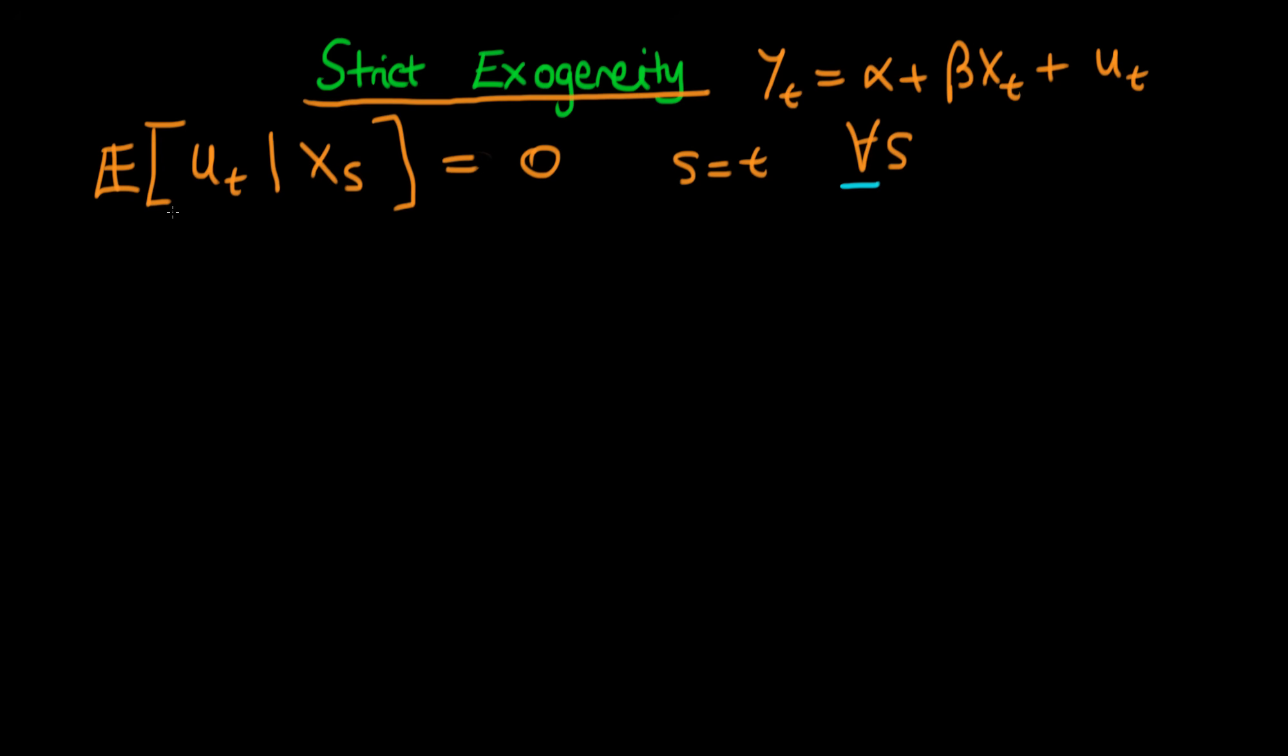This is different from the assumption in cross-sectional data which we call weak exogeneity, where the expectation of ui given xi had to equal zero. Notice these two terms have the same subscript, so the expectation of the error has to equal zero given the independent variables for that particular individual.